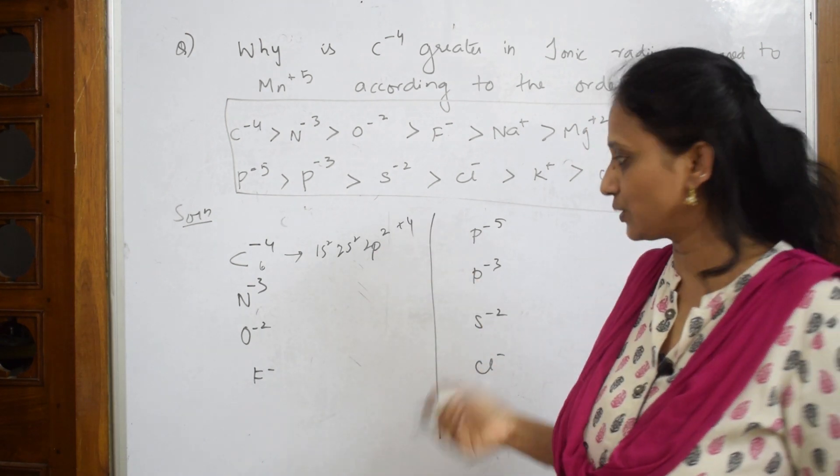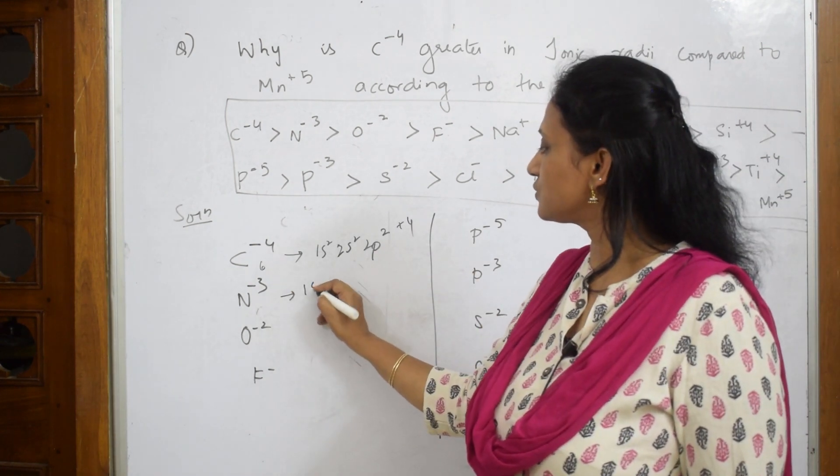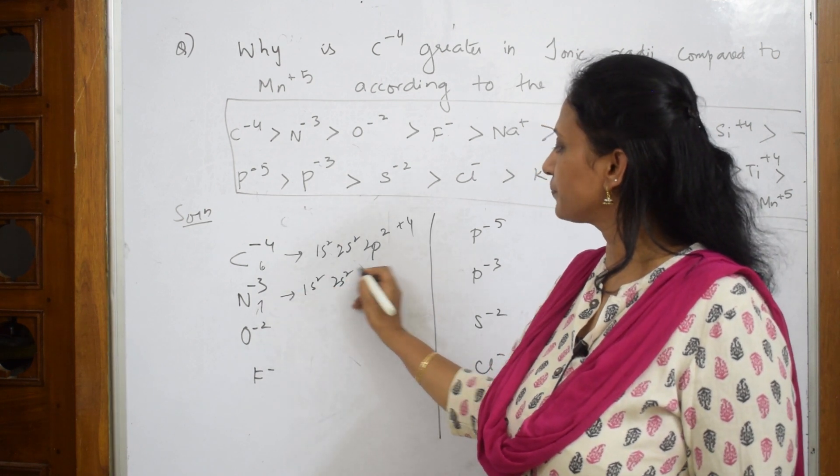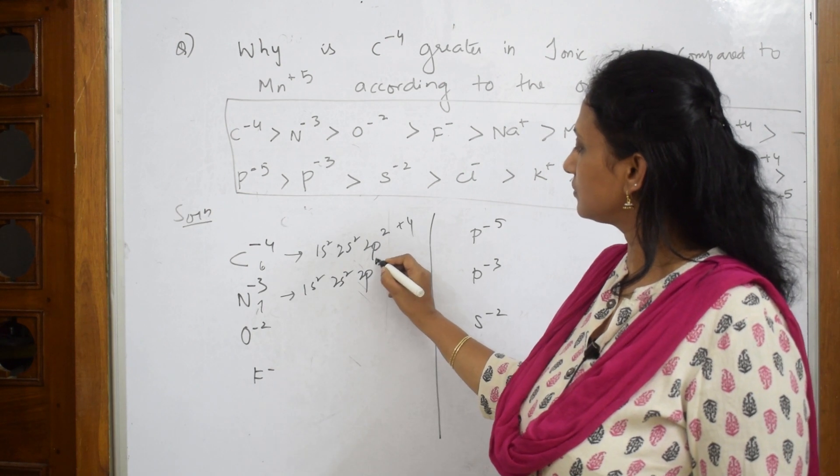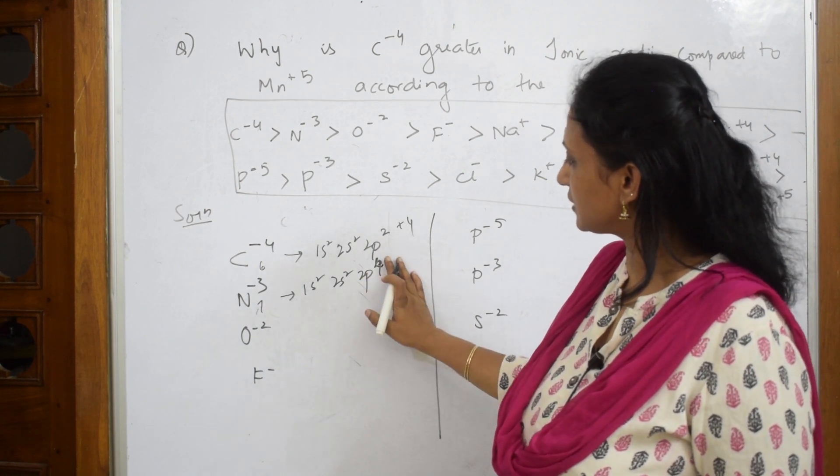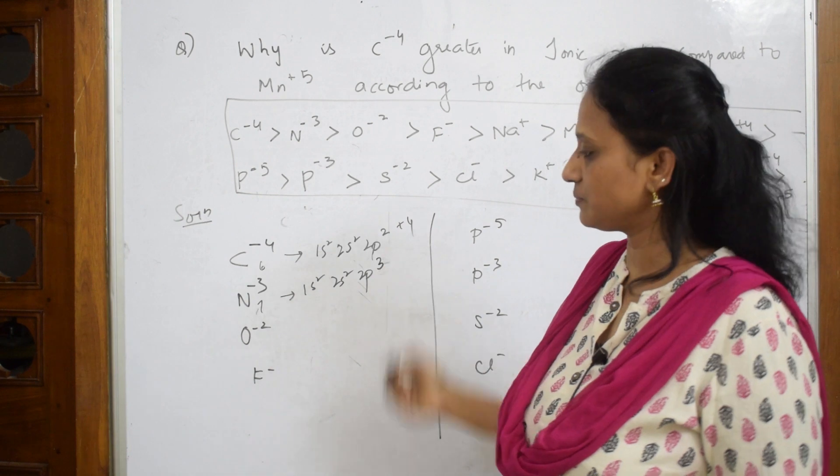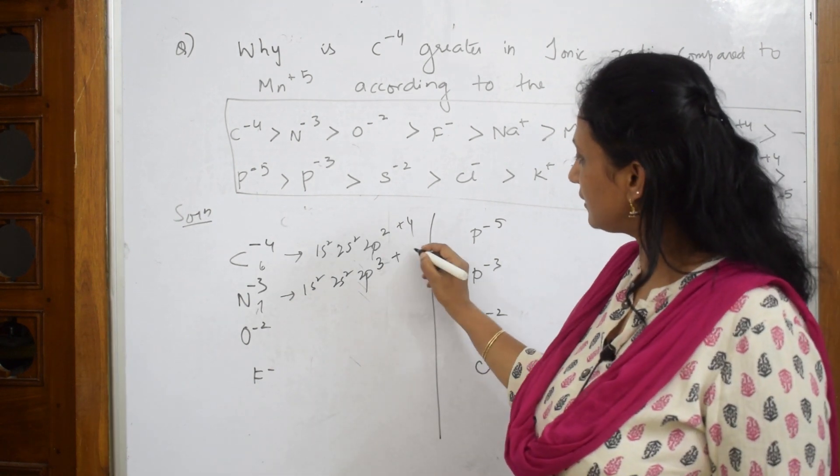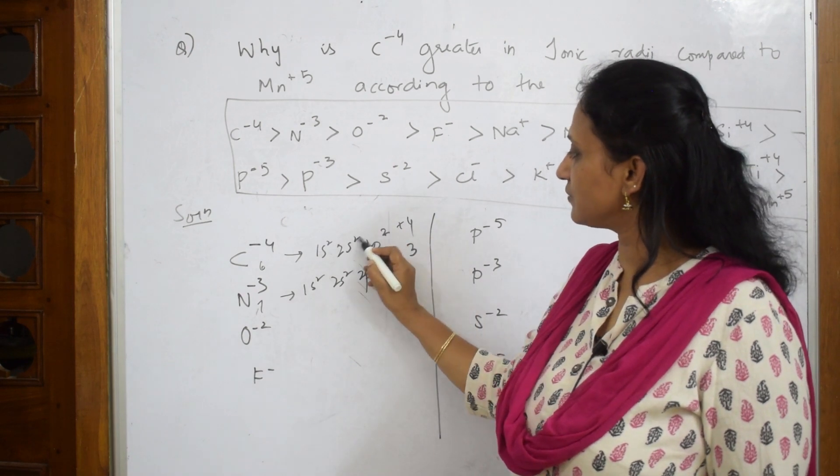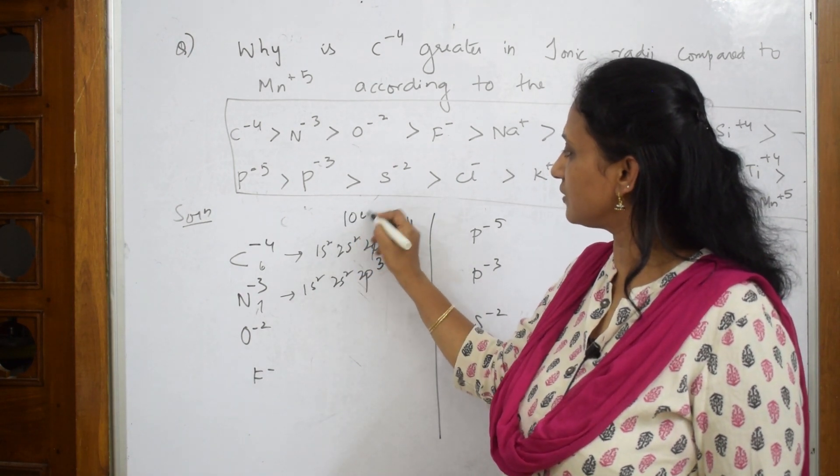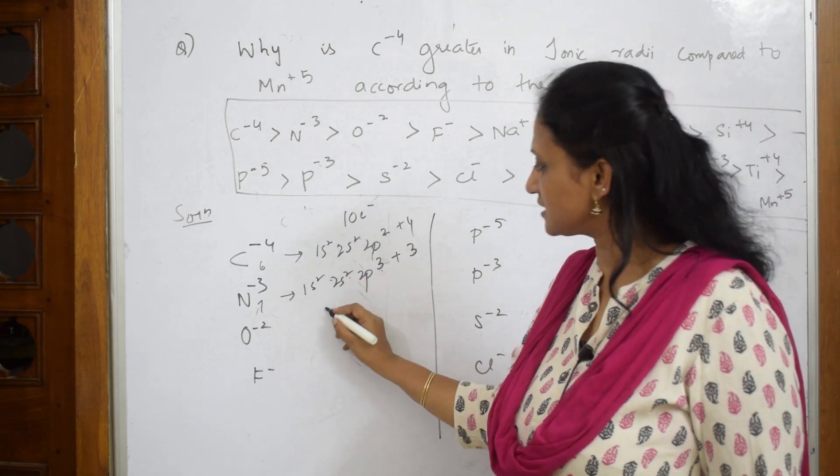Next one is N^-3. Nitrogen is atomic number 7, so it's 2s^2 2p^3. They've added 3 electrons. Now let's count: 4, 5, 6, 7, 8, 9, 10. There are 10 electrons here. In this case, 10 electrons here.